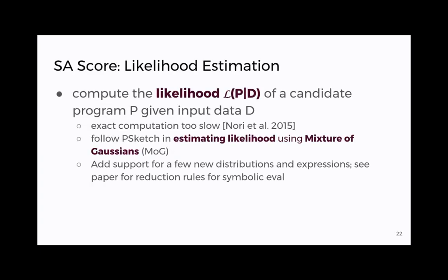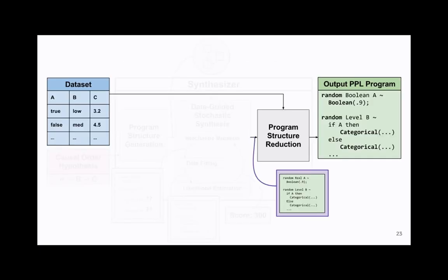At this point we'll actually produce a score by estimating the likelihood. We have to do an estimation because past work has shown, past work on a tool called pSketch that did partial PPL synthesis, has shown that it's just too slow to do the exact computation. We follow the same general technique of using a mixture of Gaussians but we add support for a few different distributions.